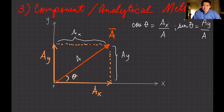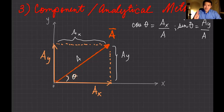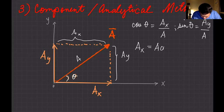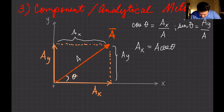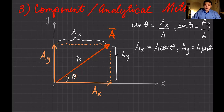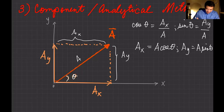These equations come directly from trigonometry. If you manipulate them by cross-multiplying, you get: Ax equals A cosine theta, and Ay equals A sine theta.